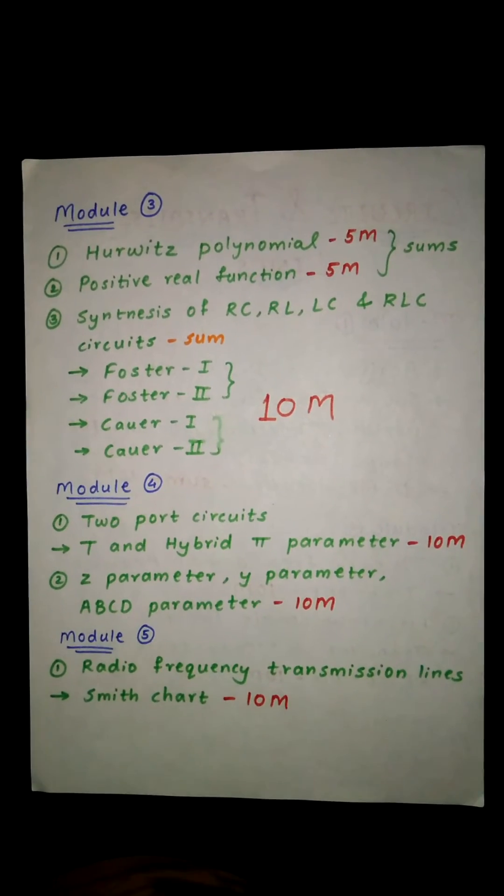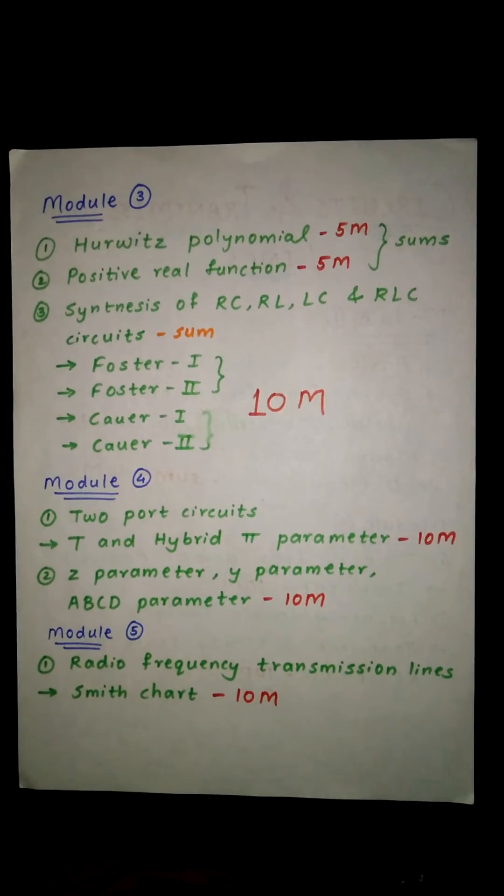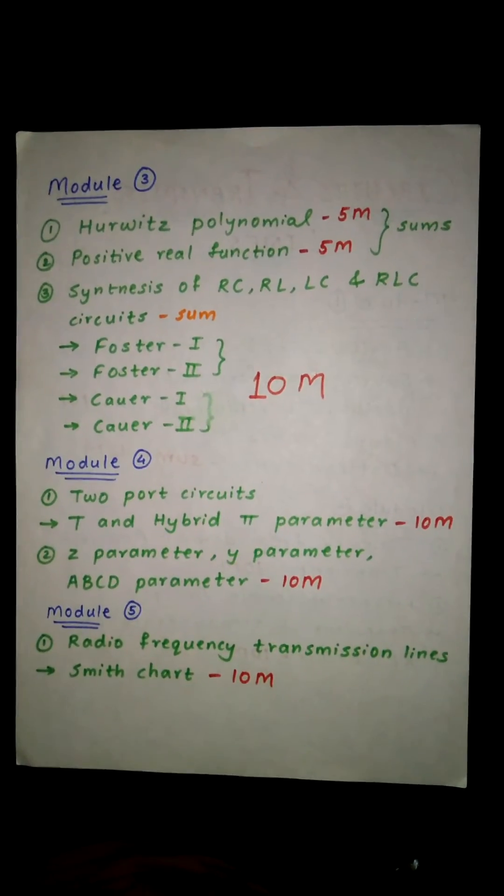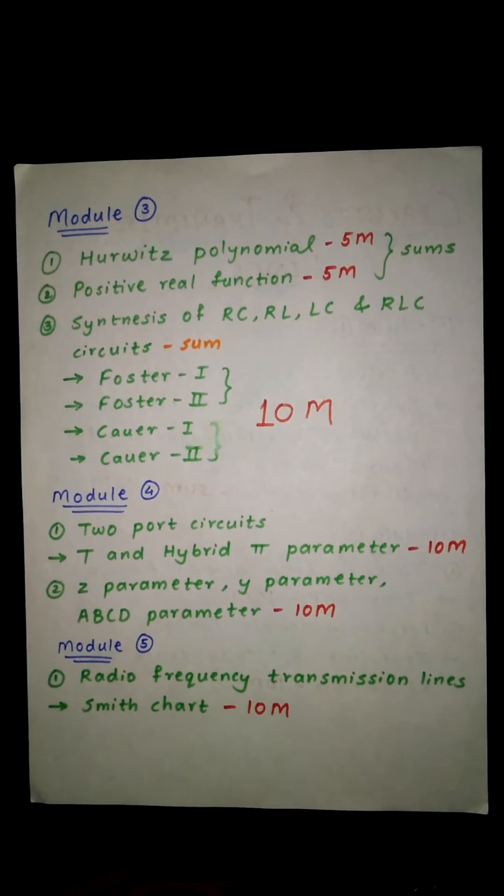From Module 4, that is two-port circuits, from this you will get T and hybrid pi parameter, that is of 10 marks. Z parameter, Y parameter, and ABCD parameter - this is also of 10 marks.